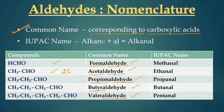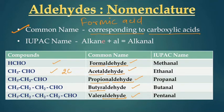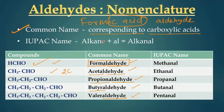So in these five common names, we keep the word 'aldehyde'. What we do is take the name of the corresponding carboxylic acid, remove the suffix 'ic acid', and replace it with 'aldehyde'. For example, formic acid — we replace 'ic acid' with 'aldehyde' — and the name of the one-carbon compound becomes formaldehyde.